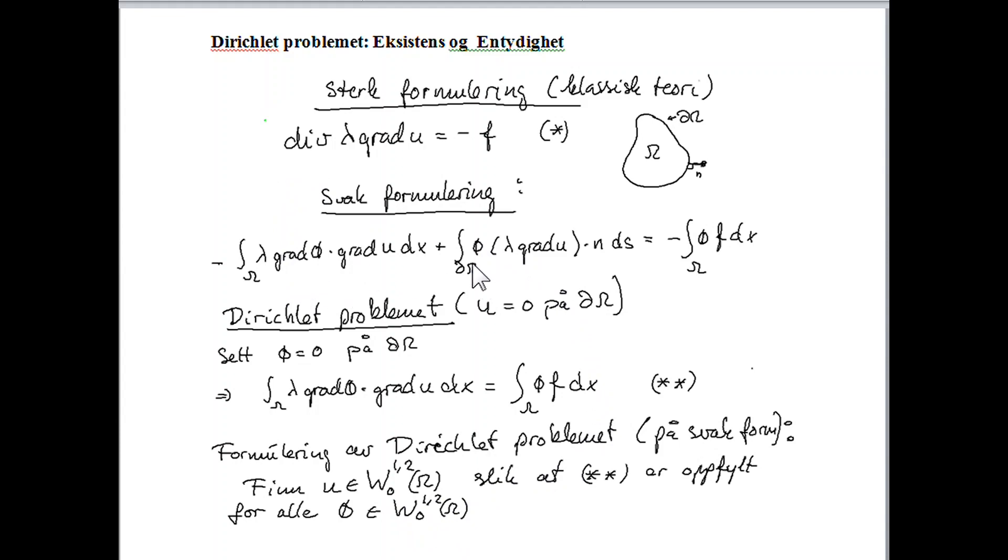In this case, we have this boundary integral. This integral is taking along the boundary, and note that phi is zero on this boundary. So therefore the integrand here will be zero. And we conclude that this integral will vanish, and we end up with this integral, or this identity.